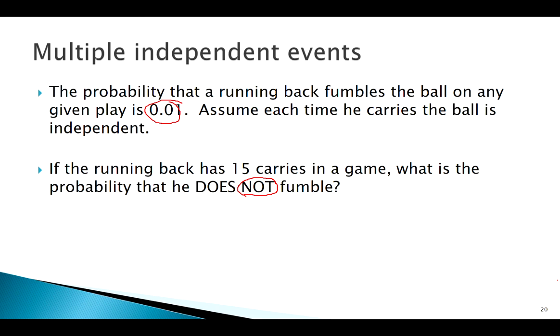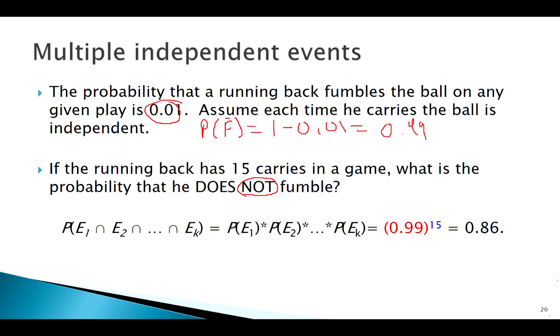Notice before I go into this, I have the probability that he's going to fumble. What's the probability he does not fumble? Probability of not fumble equals 1 minus the probability he fumbles. In other words, that's 0.99. So 15 independent events all with the same probability.